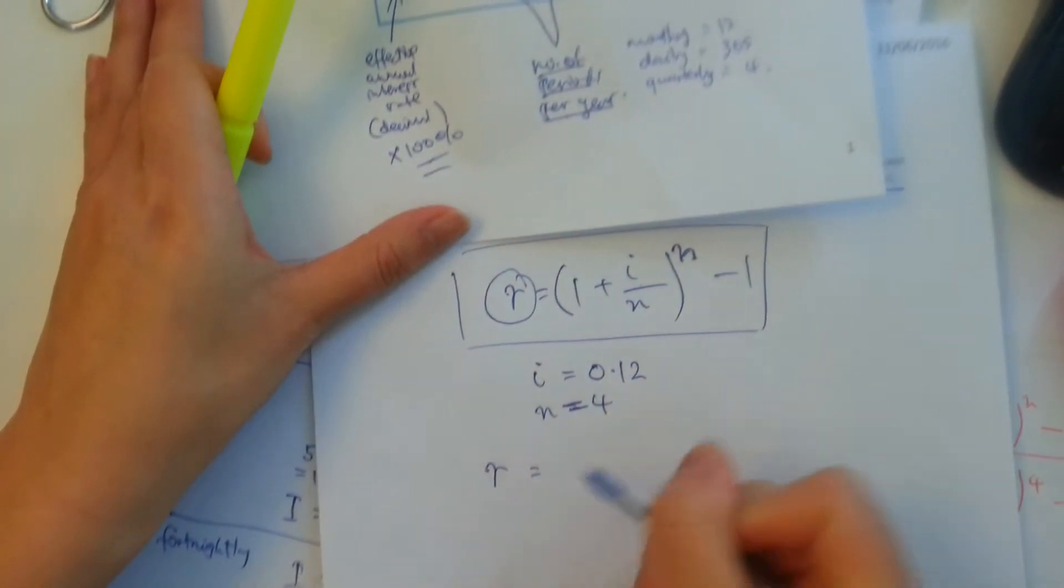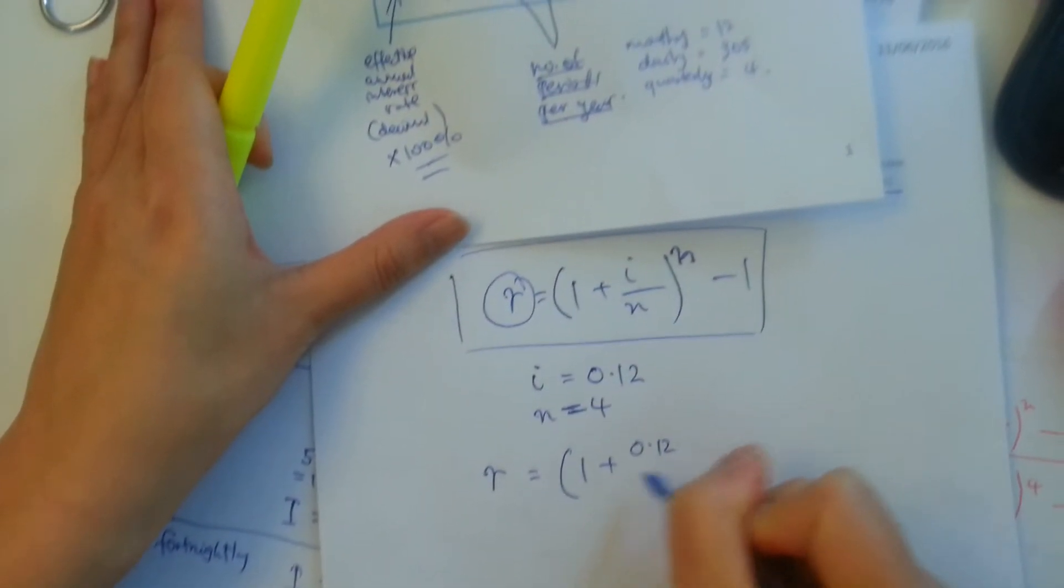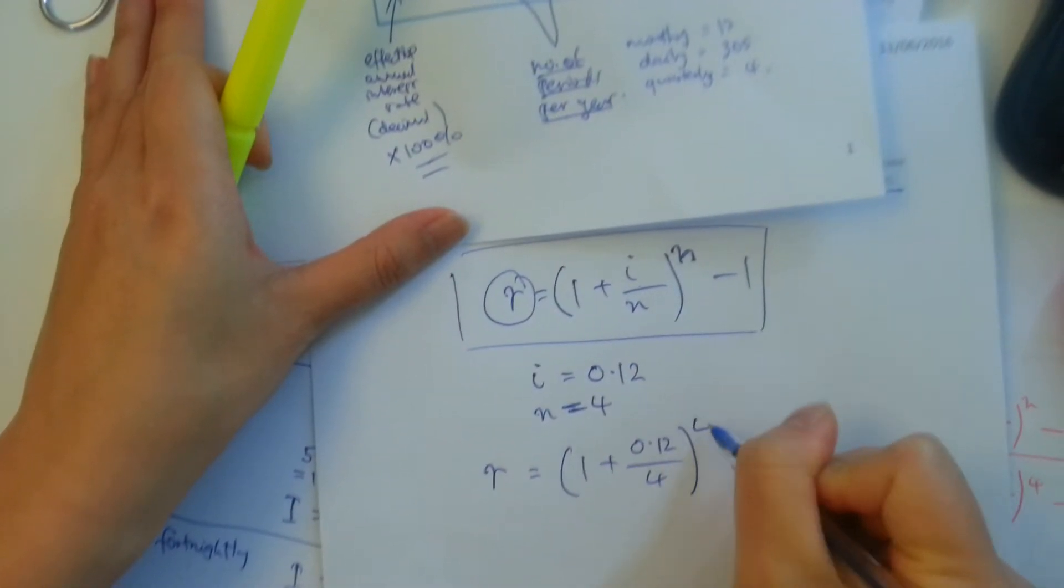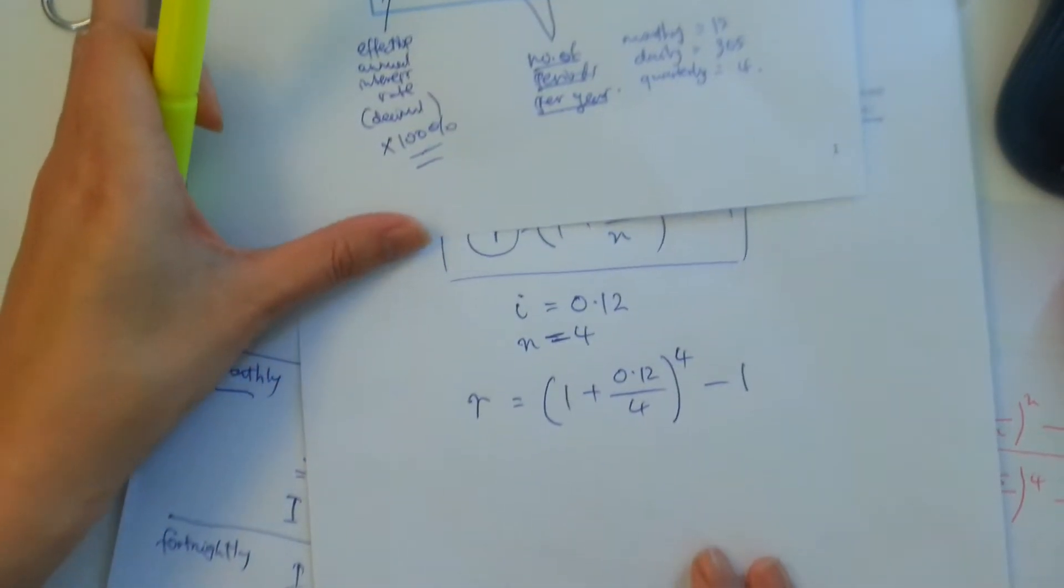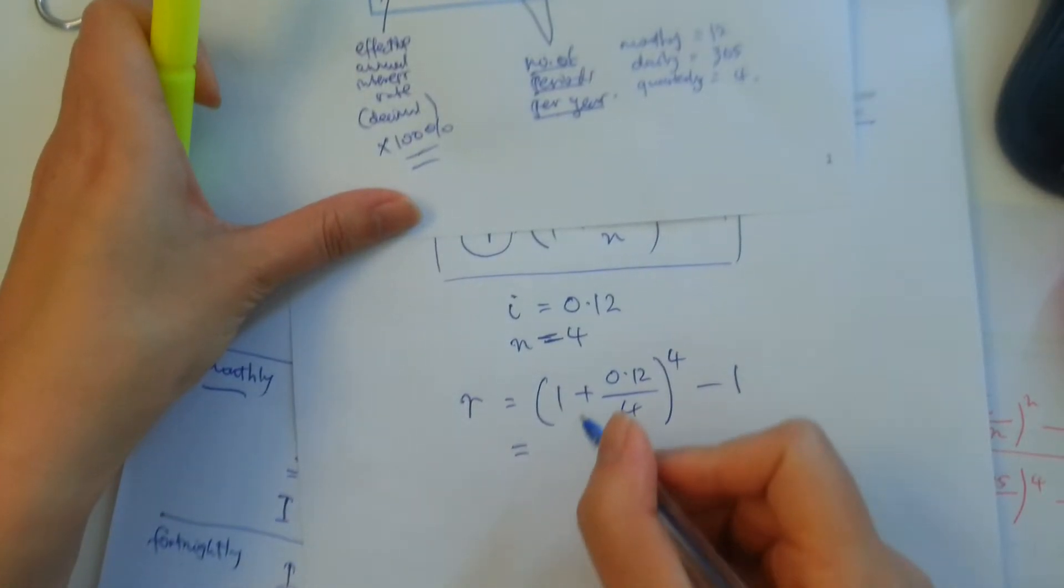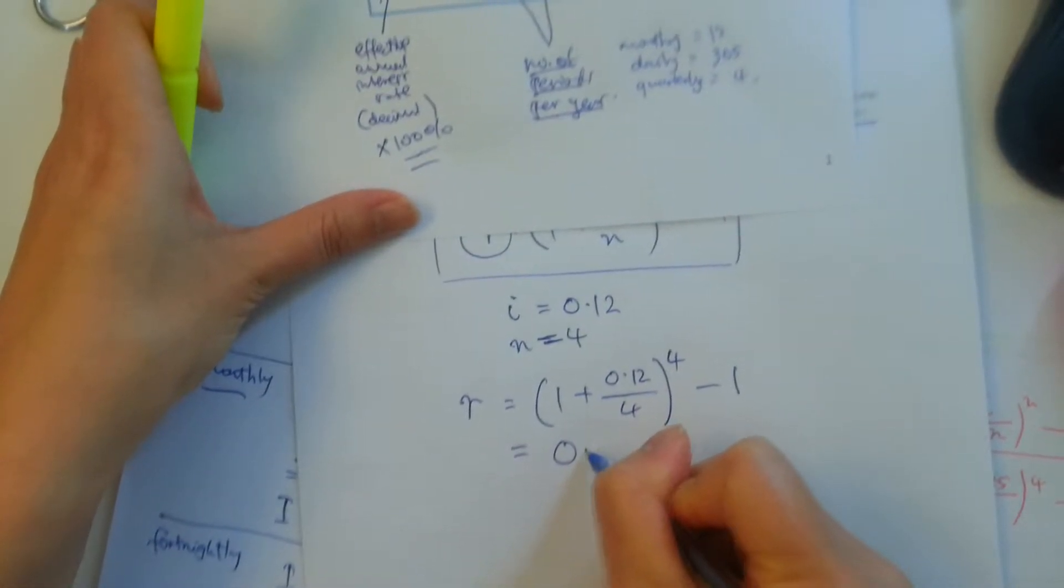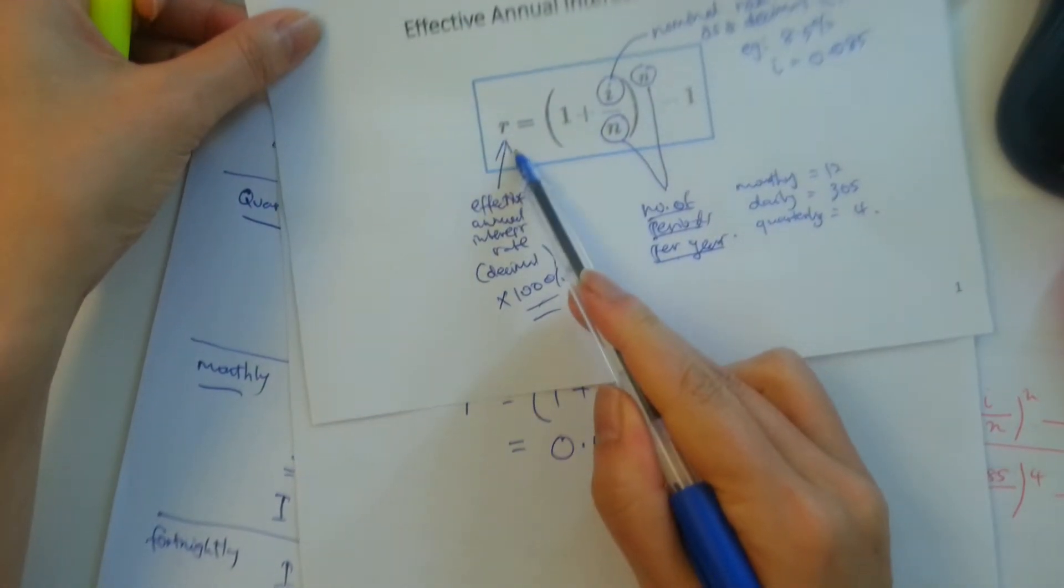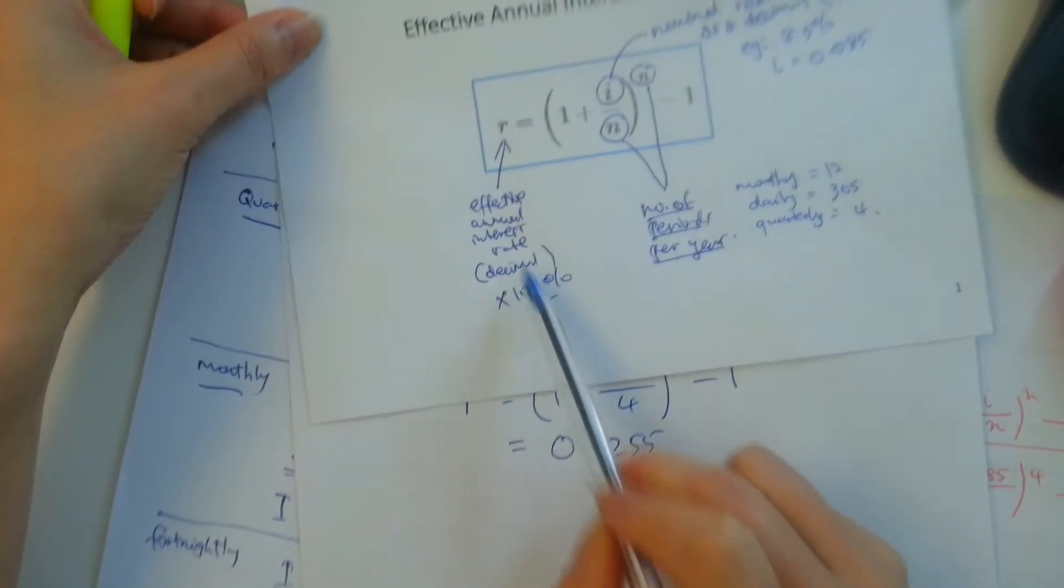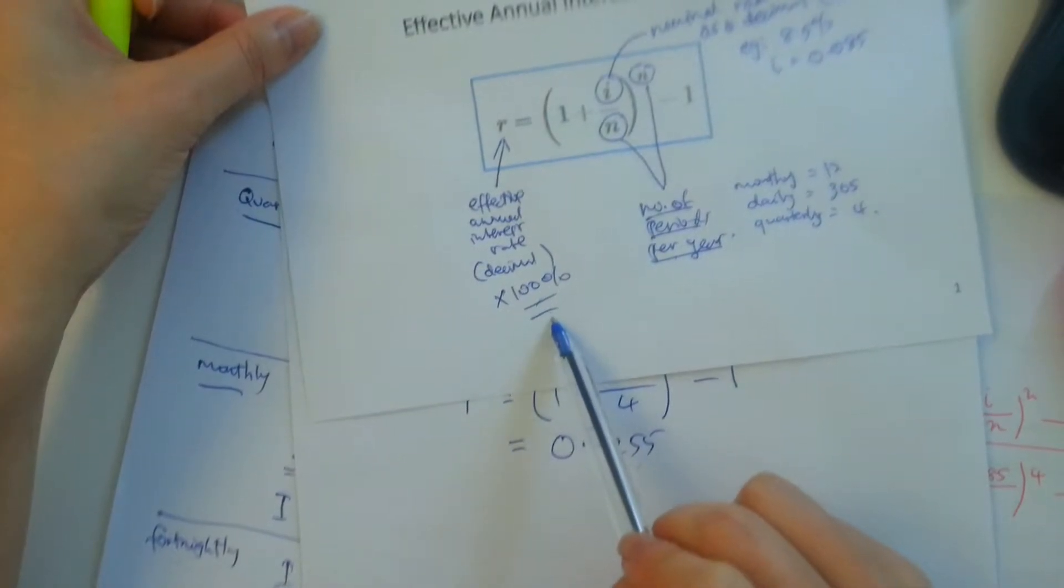So we just pop it into the formula. Effective annual interest rate is equal to 1 plus 0.12 divided by 4, close brackets to the power of 4 minus 1. And make sure you input this properly in your CAS calculator. Once you've done that, hit enter, and your answer should come out as 0.1255.